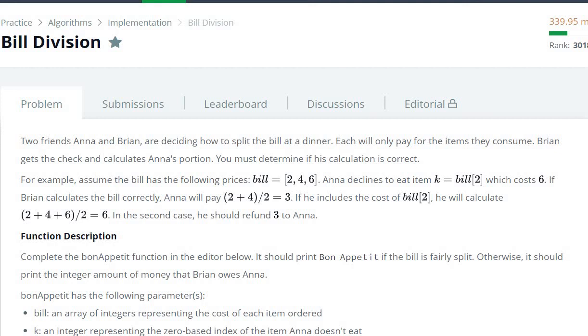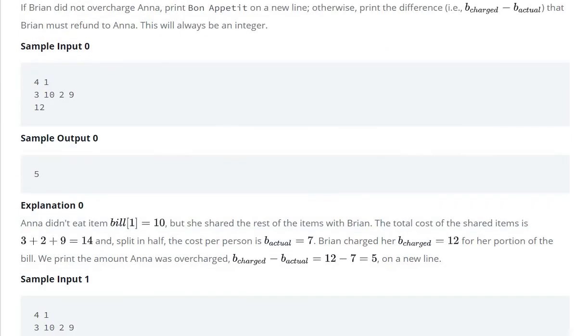Hello everyone, today we are going to see the Bill Division question in HackerRank algorithm. Let us understand the problem. So we have n is equal to k, where n represents the bill and k represents an index.